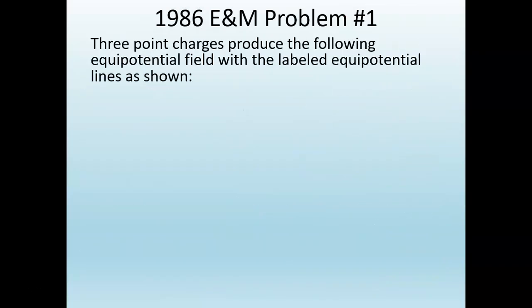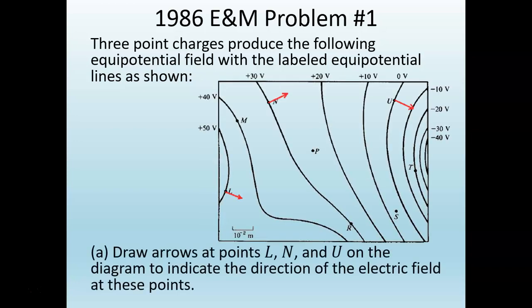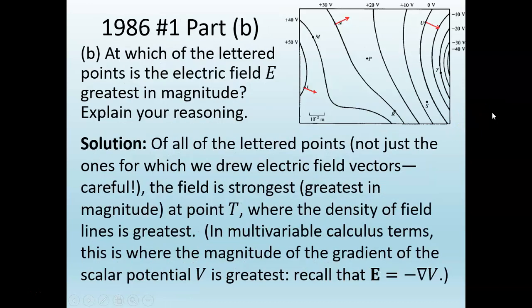Let's review the scoring. For Part A, one point was given for all vectors drawn with correct sense (from higher to lower potential), one point for all vectors drawn perpendicular to the equipotential lines, and one point for showing vectors at all three points. For Part B, one point for identifying point T as having the greatest field magnitude, and one point for noting the equipotential lines are closest together near T.